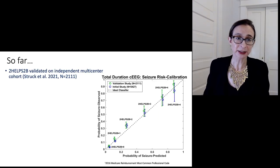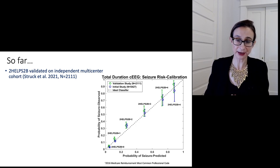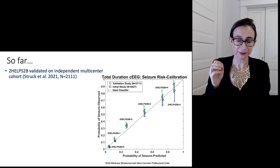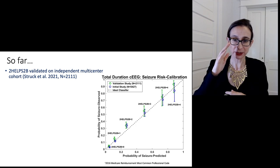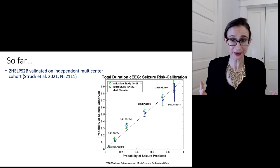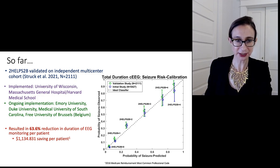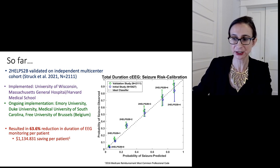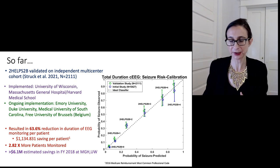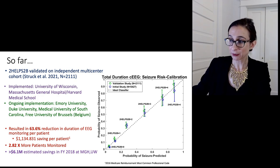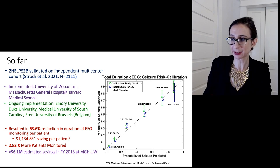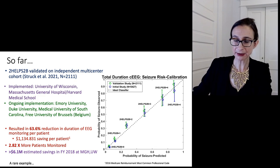The 2HELPS2B score has held up really well. It was validated on an independent multicenter cohort — done by neurologists, not my team. The predicted probability of seizure agrees with the true probability of seizure for both the training dataset and the validation study. It's been implemented in several hospitals and resulted in a substantial reduction in the duration of EEG monitoring per patient, allowing doctors to monitor 2.82 times more patients than before, which helps reduce brain damage and save lives. The whole reason we could use this model is because we can understand it — because it's interpretable.